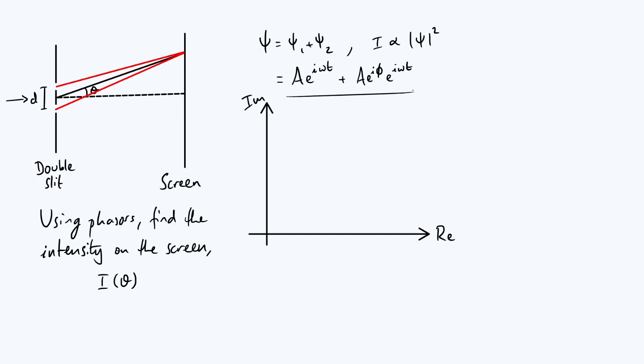And phasors are basically arrows drawn on an argand diagram showing the real and imaginary parts of each complex number. So let's start by drawing an arrow on our diagram to represent that first complex number, ae to the i omega t. We're going to start it from the origin, and I'll just draw it with some arbitrary argument represented by this angle here. What is that argument? Well, it's omega t from this e to the i omega t, but also bear in mind that a itself is a complex amplitude, and so we're going to have to add on whatever the argument of a is.